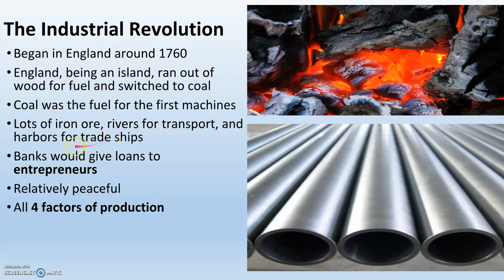The third big thing is that there's lots of iron in England. You need iron to make things like steel tubes, machines, and engines. There are also rivers for cheap transportation — it's cheap to move things by river. There are also harbors for trade ships. And there are lots of banks that are willing to give loans to entrepreneurs — someone who is starting factories and plants and coming up with businesses.